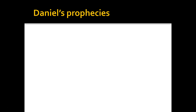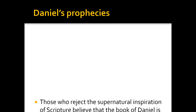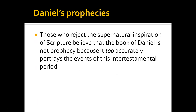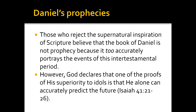The first thing we want to focus on is looking at Daniel's prophecies in the book of Daniel. Those who reject the supernatural inspiration of Scripture believe that the book of Daniel is not prophecy because it is too accurate — it too accurately portrays the events of this intertestamental period. Their argument is it must have been written after the fact. However, God declares that one of the proofs of his superiority to idols is that he alone can accurately predict the future.